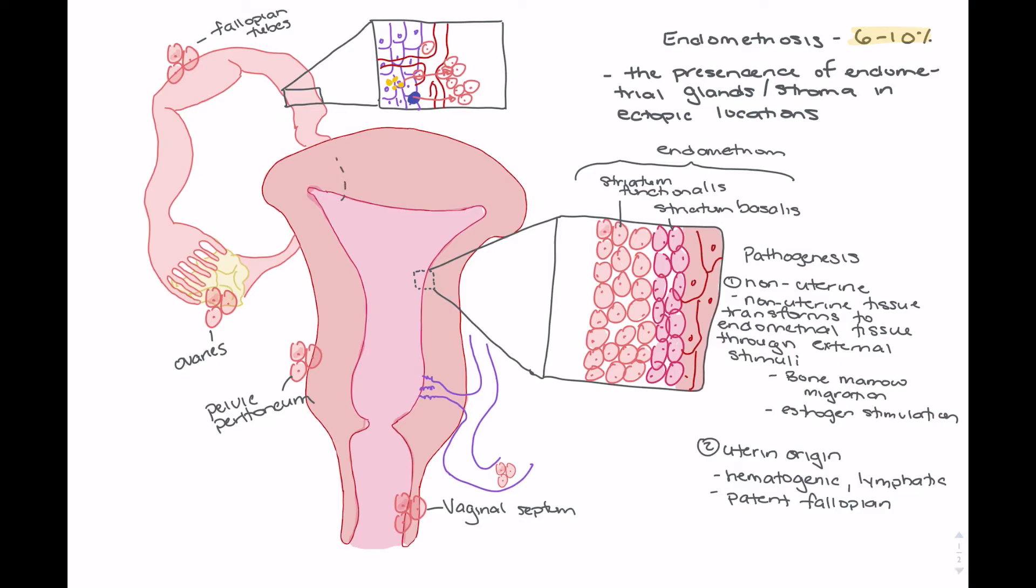To reiterate what's happening when we have the patent fallopian tube, we're actually seeing, with these grey lines, the retrograde flow of endometrial tissue during menstruation. So the tissue is being sloughed off during menstruation, and instead of exiting through the vaginal canal, we actually see retrograde flow of those tissues and cells through the fallopian tubes. And if the fallopian tube is patent, we can see it exiting, where it can now attach to the ovaries or the pelvic peritoneum. Interestingly, we see a low incidence of endometriosis in women who have non-patent fallopian tubes, suggesting that this theory has considerable weight.